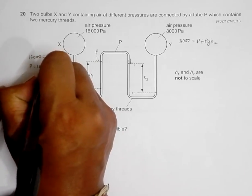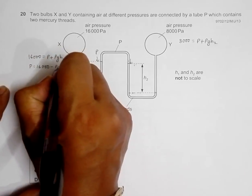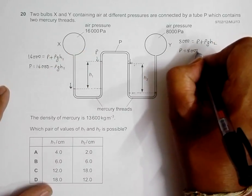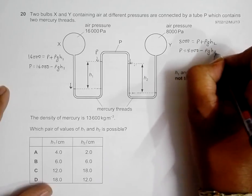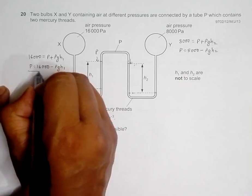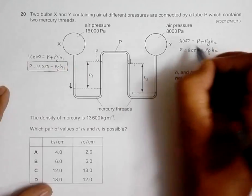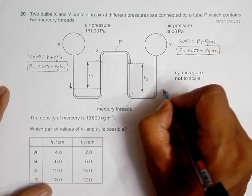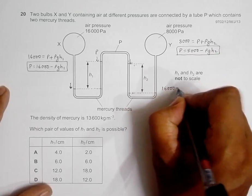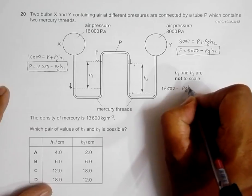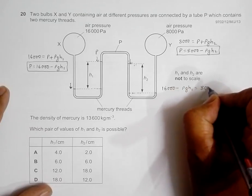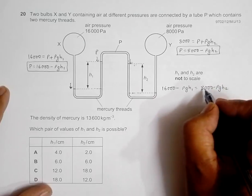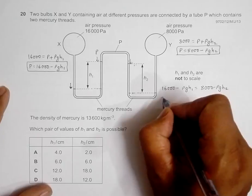So what I can do now is: this P is equal to 16,000 minus ρgh1, and this P is equal to 8,000 minus ρgh2. If I equate these two equations, I will have 16,000 minus ρgh1 should be equal to 8,000 minus ρgh2.